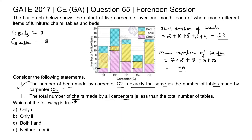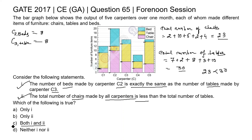The statement says the total number of chairs made by all carpenters is less than the total number of tables. We can see 23 is less than 30, so the total number of chairs is indeed less than that of tables. This statement is also true. Both statements are true, and option C — which states both 1 and 2 — is the correct answer. Thank you.